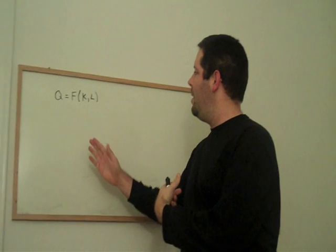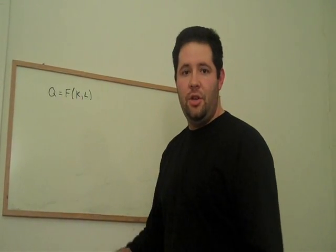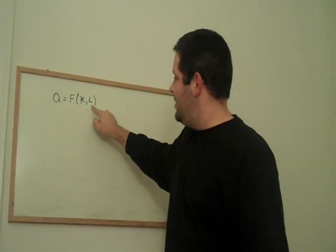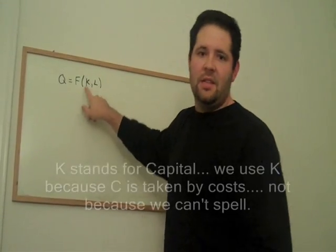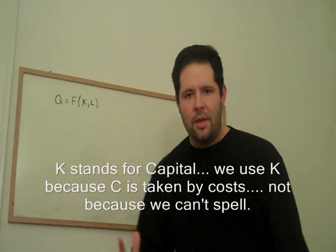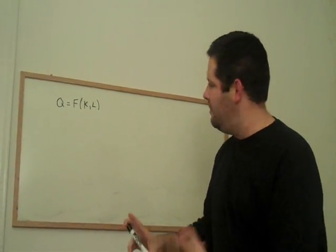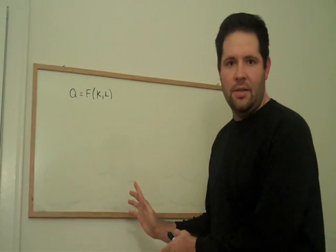So let's examine a production function. This production function takes two inputs, K and L, and turns them into an output, which we call Q. K stands for capital, the machines, the computers, the desks, that sort of thing, and L stands for labor. Now surely there are more inputs, but this is going to be a useful simplification of the production process.